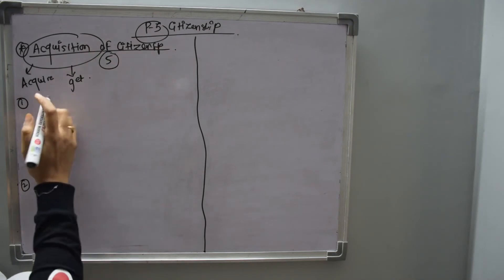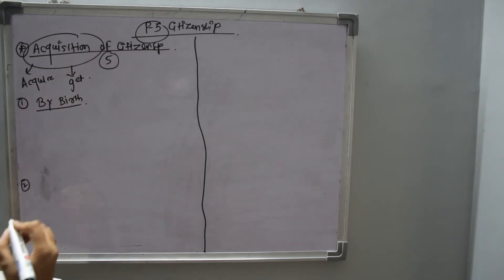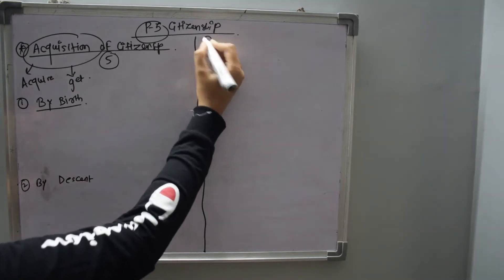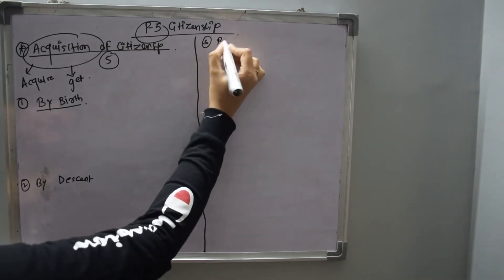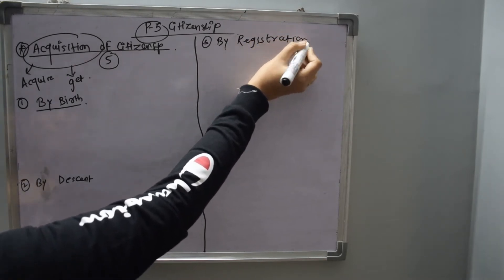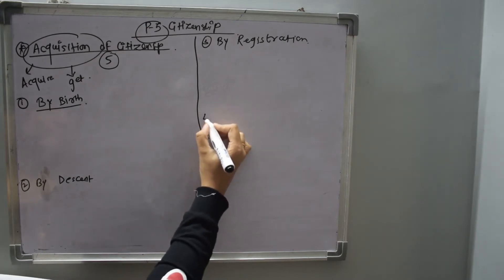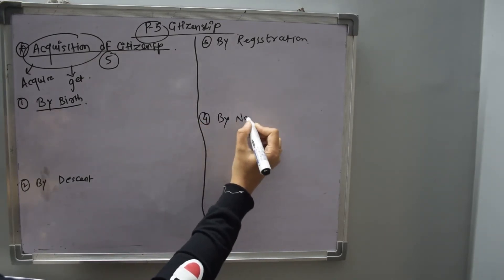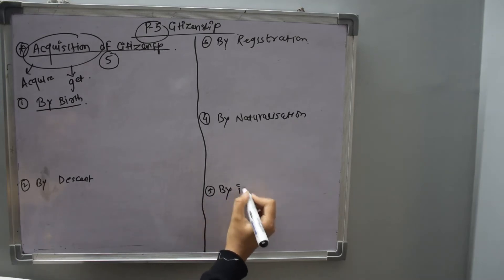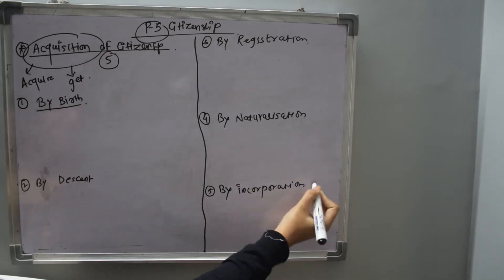The first point — how we can acquire citizenship — is: first, by birth; second, by descent; third, by registration; fourth, by naturalization; and fifth, by incorporation of territory.